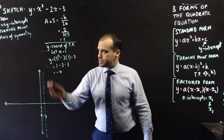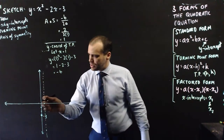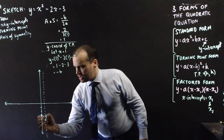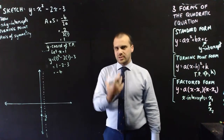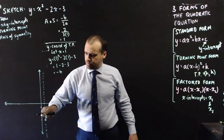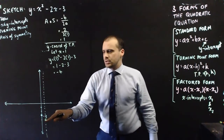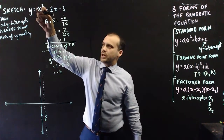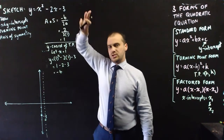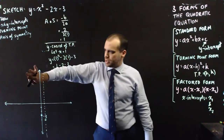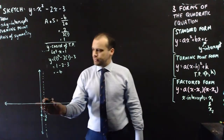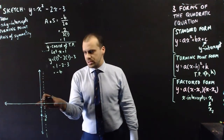My turning point is going to be (1, negative 4). Now you need to stop and ask yourself: does this make sense? I've got an axis of symmetry, a y-intercept, and a turning point below it. My a value is positive, which means it's going to be a smiley-faced quadratic. So it's going to swoop down, turn there, and come back up. I need to find my x-intercepts now.